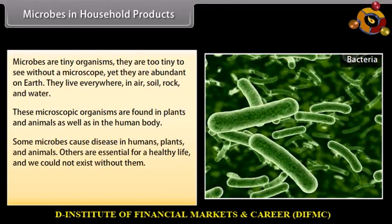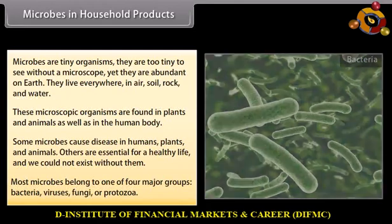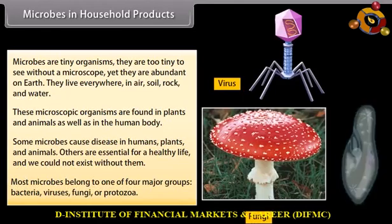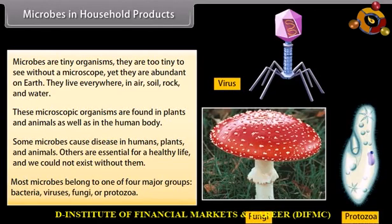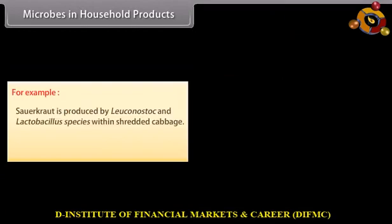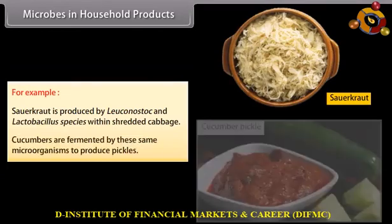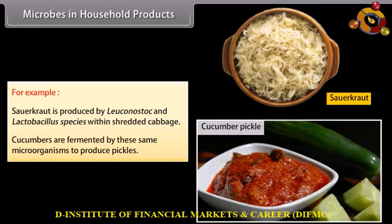Some microbes cause diseases in humans, plants, and animals. Others are essential for a healthy life and we could not exist without them. Most microbes belong to one of four major groups: bacteria, viruses, fungi, or protozoa. There are many food products formed from microbes. For example, sauerkraut is produced by Leuconostoc and Lactobacillus species within shredded cabbage. Cucumbers are fermented by these same microorganisms to produce pickles.